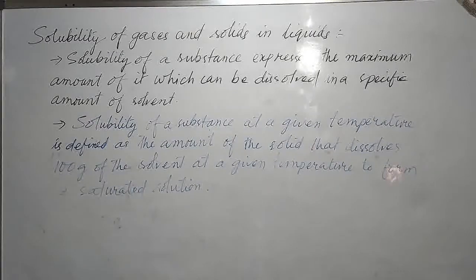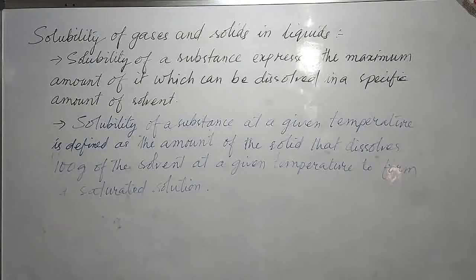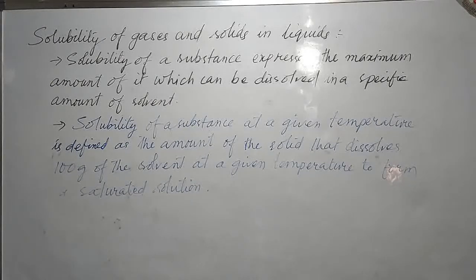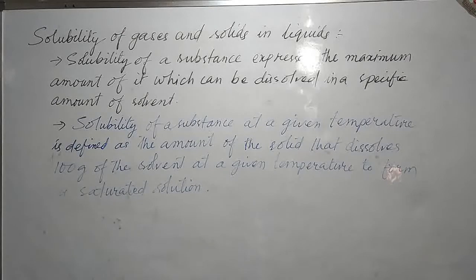Hello class. In this video we shall be discussing the topic: solubility of gases and solids in liquids. Let us first see the definition of solubility. We can define it in two ways. The first one: solubility of a substance expresses the maximum amount of it which can be dissolved in a specific amount of solvent. In simple terms, it means the maximum amount of substance that can be dissolved in a given amount of solvent is called solubility.